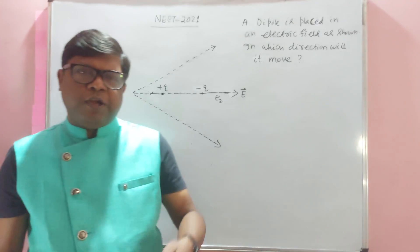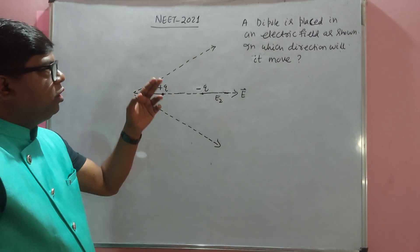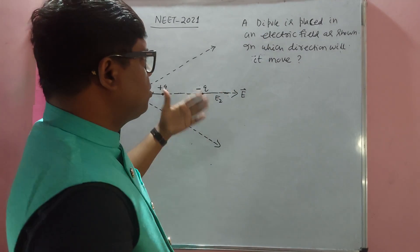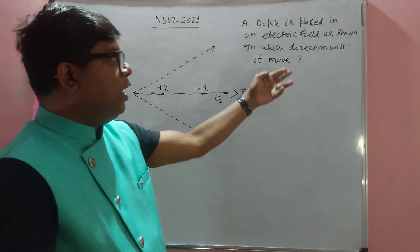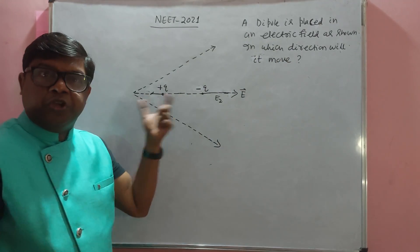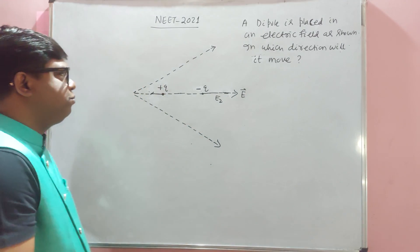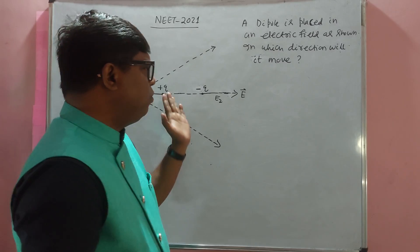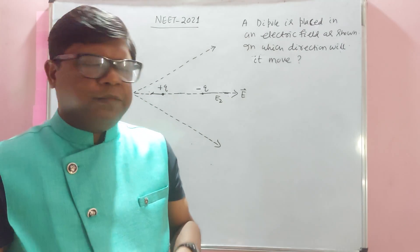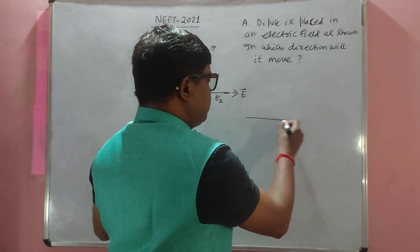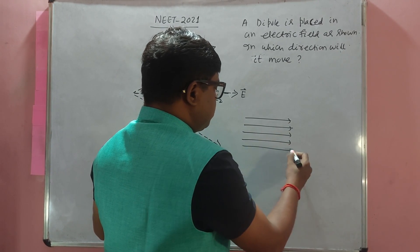A dipole is placed in an electric field. Looking at the figure, we need to discuss in which direction the dipole will move. First of all, we need to know whether this electric field is uniform or non-uniform.